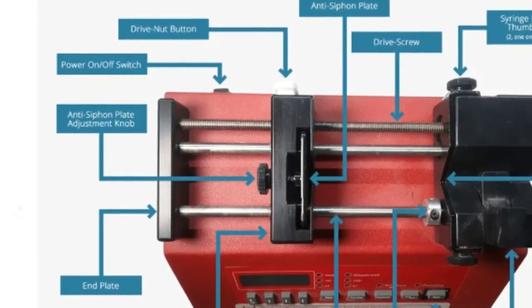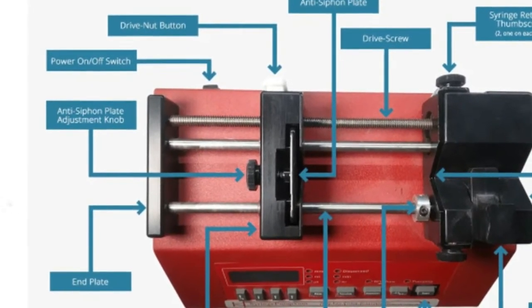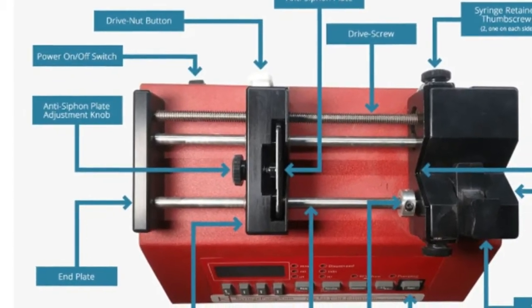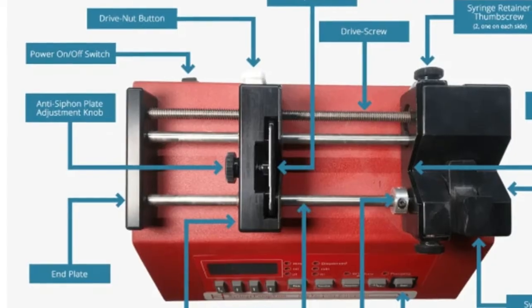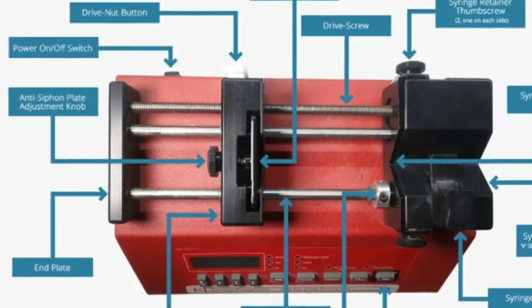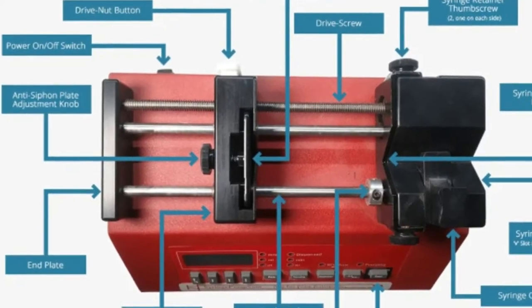The tenth component is the drive screw, commonly referred to as the lead screw. The pump motor, unseen, drives this precision threaded rod which passes through a brass nut block, also unseen, into the pusher block. This pushes and pulls the pusher block and thus the syringe plunger flange.